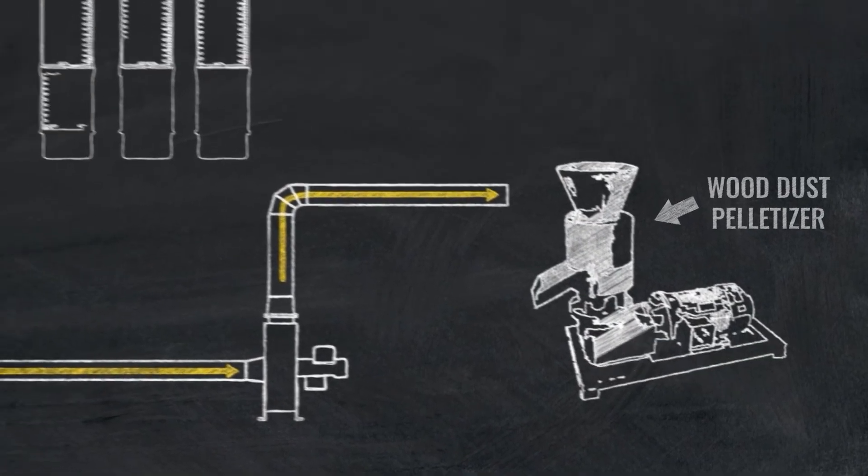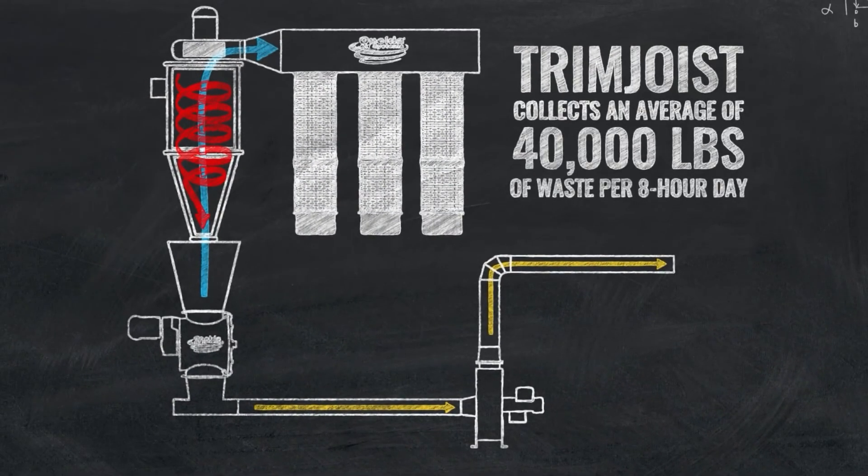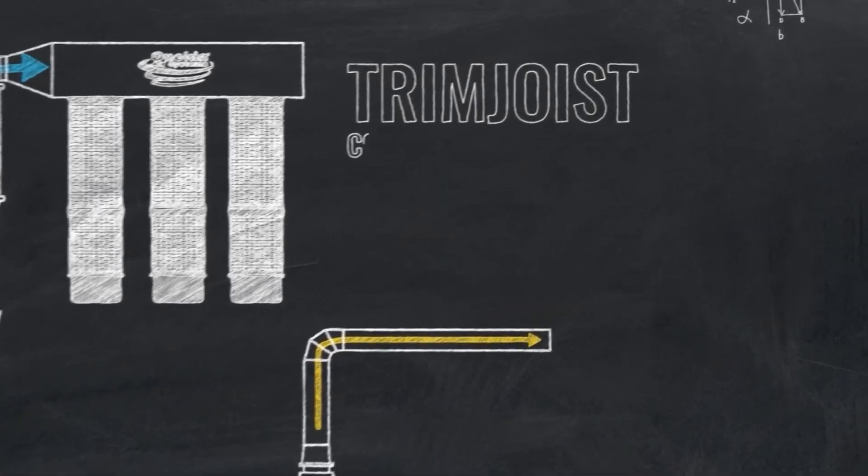For example, an industrial customer, Trim Joist, collects an average of 40,000 pounds of waste material in their Oneida systems equipped with airlocks and transfer blowers during an eight-hour period without shutting down once to empty a drum.